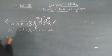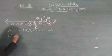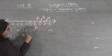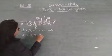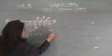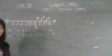Whole numbers start from 0 and go to infinity in the positive direction. Whole number is indicated as W, and it is 0, 1, 2, 3, 4, and so on to infinity.